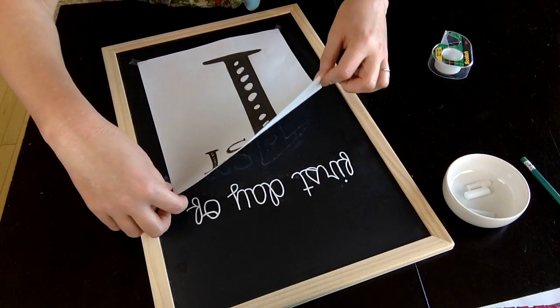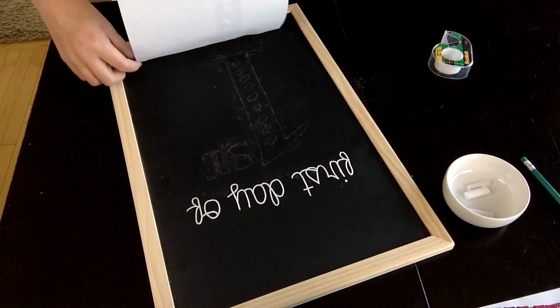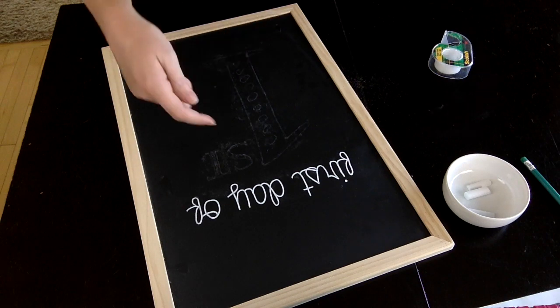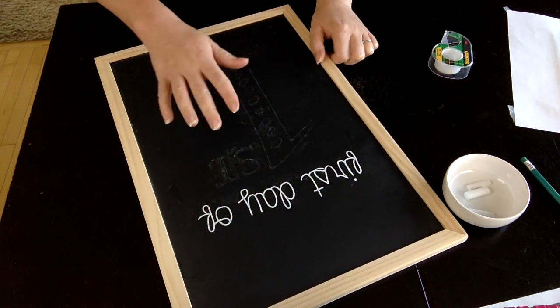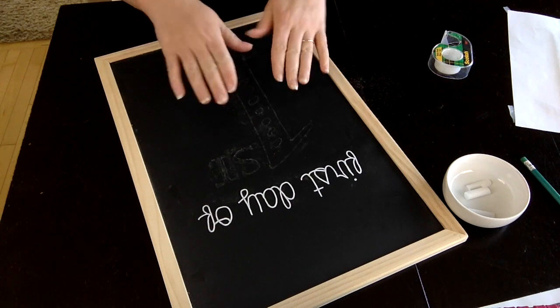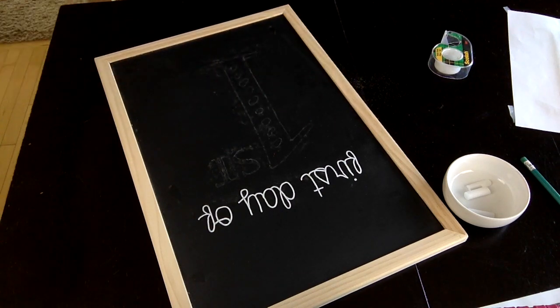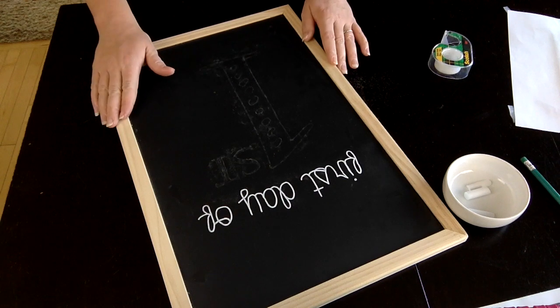Lift up this stencil, and you can see that very light faint outline that I drew with the pencil has transferred that chalk dust onto the chalkboard. Now I can see where I want to go back over this with my chalk pen.